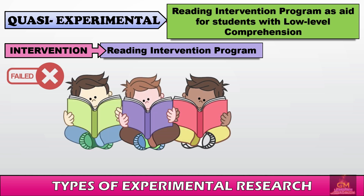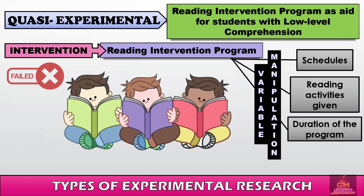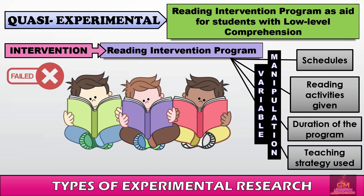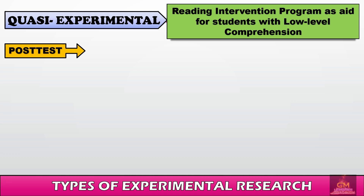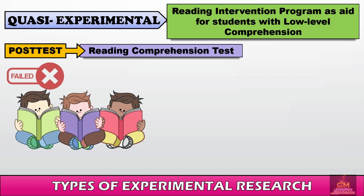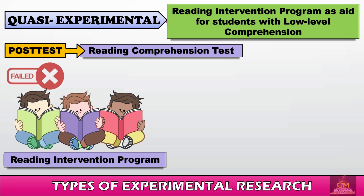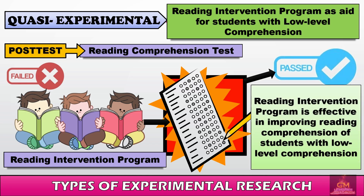Once participants are identified, they undergo the reading intervention program, which can be manipulated through the duration of the program, the schedules given, the reading activities, and the teaching strategy used. After the intervention, a post-test — another reading comprehension test — is administered. If the students who previously failed now pass, the conclusion is that the reading intervention program is effective in improving reading comprehension of students with low-level comprehension.